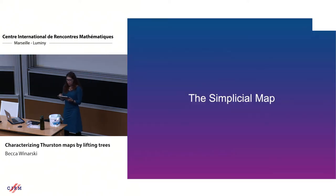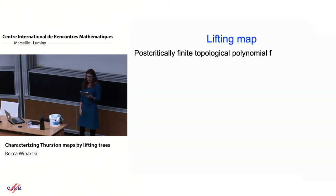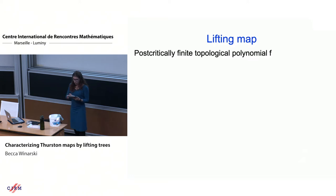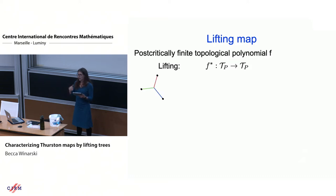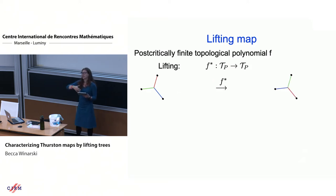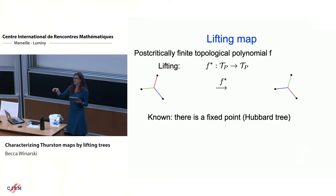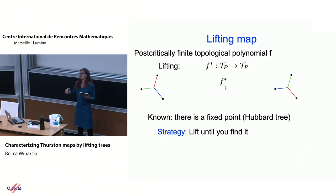We now define a simplicial map on this simplicial complex using the lifting map. If we have a post-critically finite topological polynomial F, we can lift any given tree by taking its pre-image and removing edges not part of the hull among the marked points. We then extend this to the entire tree complex. It is known that the Hubbard tree is a fixed point of this lifting map, and our strategy is to lift any tree until we end up at the Hubbard tree.